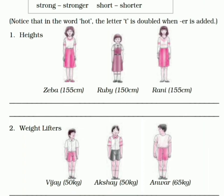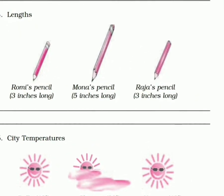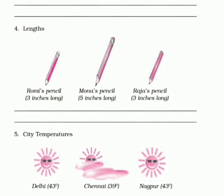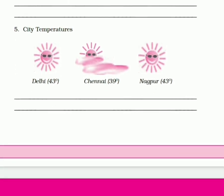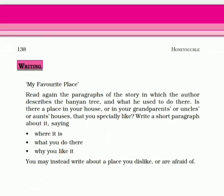Yahaan pe do jano ko compare kar rahe hain. Isi tarah se aapne saba compare karna hai ek dusre ko. Aapne degree of comparison jo woh padha hoga, wohi hum yahaan pe use karte hain. Jab do chizayn ek jaisi hoti hain toh hum kya use karenge? As [adjective] as. Aur jab choti badi ko hum compare karenge toh hum kya lagaayenge? -er lagaaye. Toh is tarah se aapne fourth or fifth bhi karne hai.